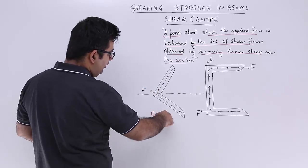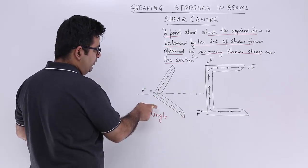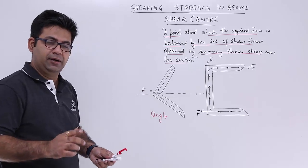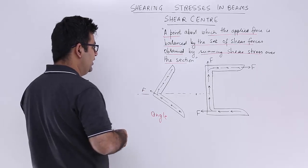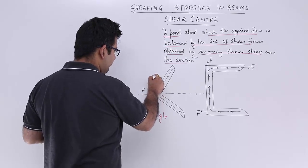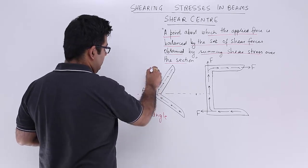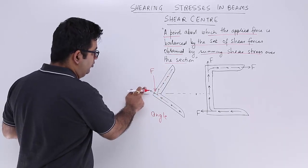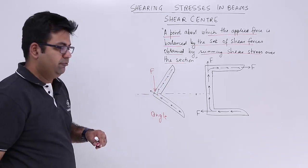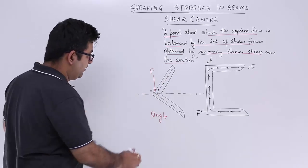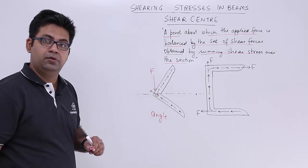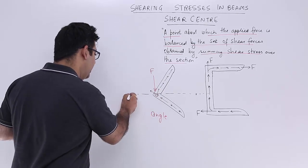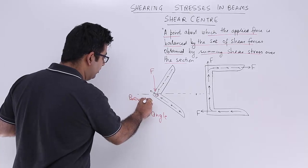Now the resultant of this force and this force obviously has to be at the corner. Unless I apply a force at this point F, which will balance this resultant coming out of this corner, it will twist. So it is already bending.